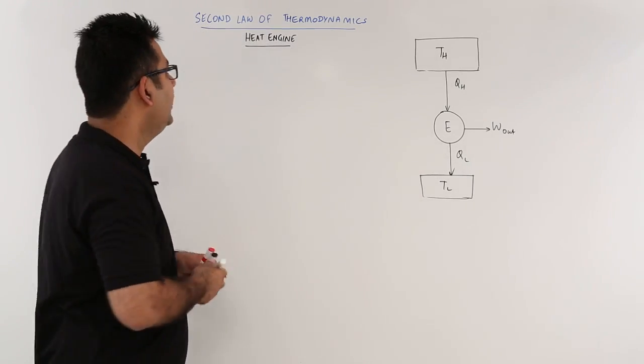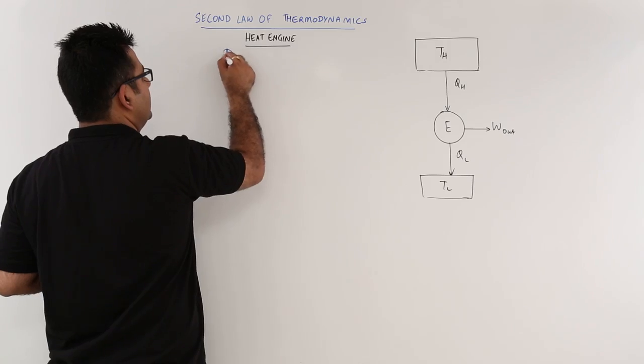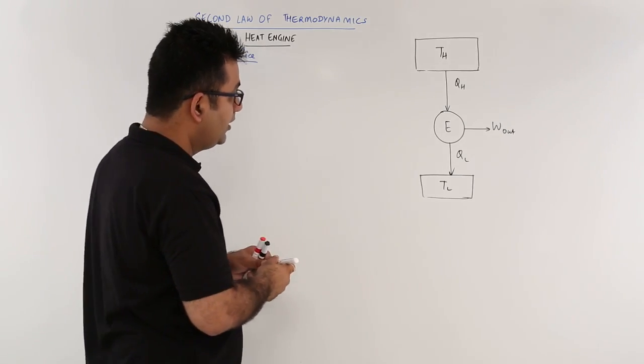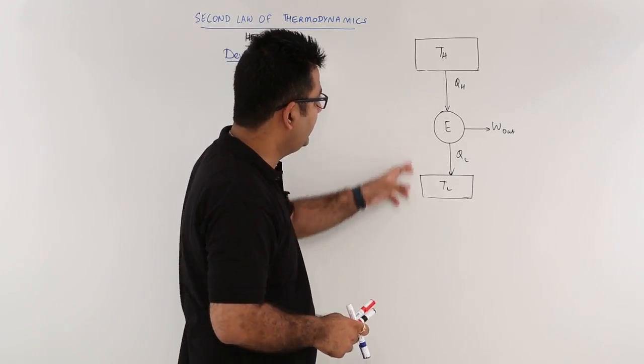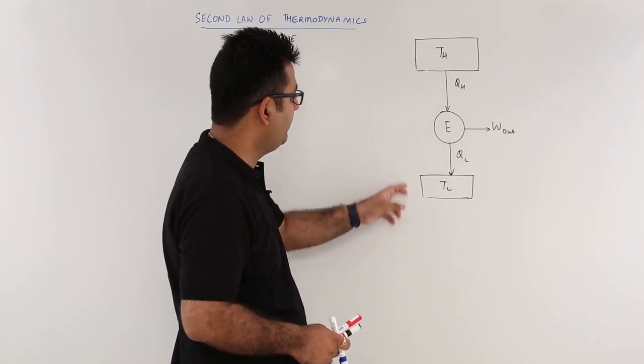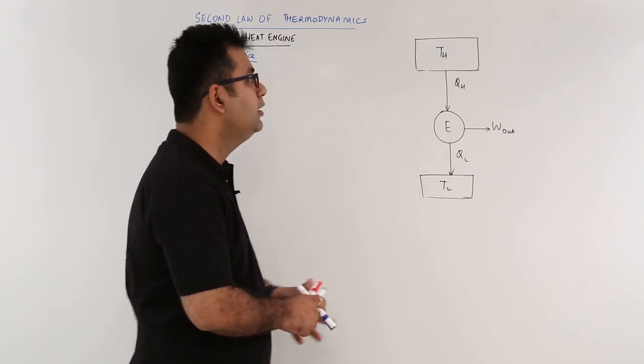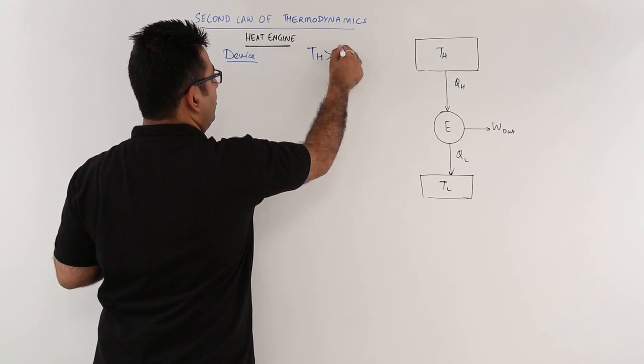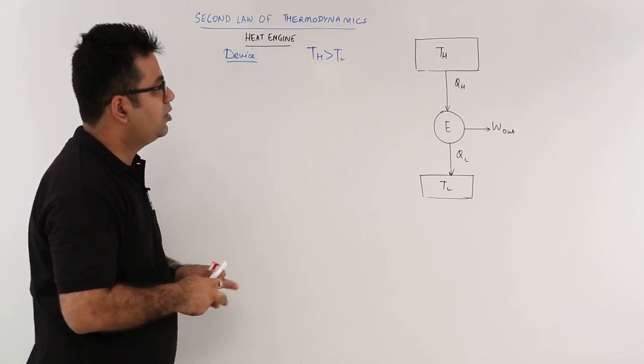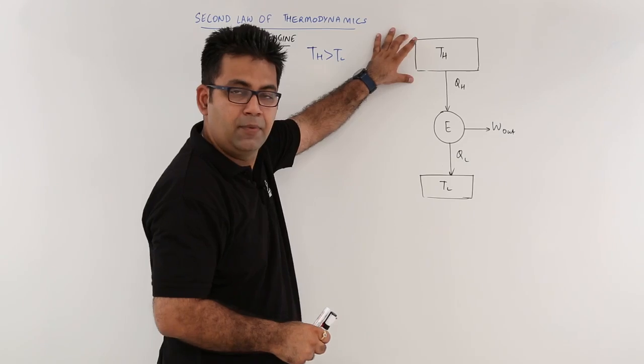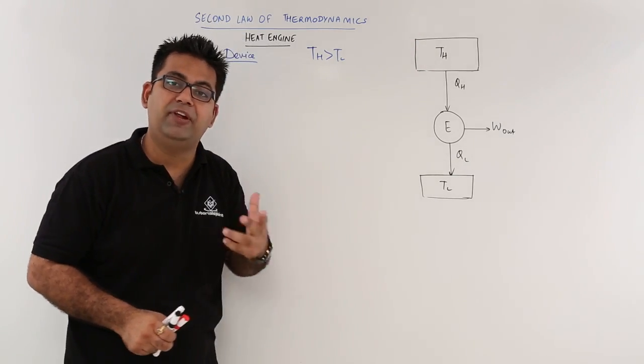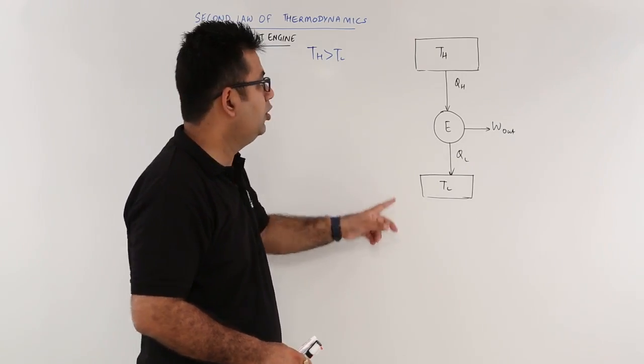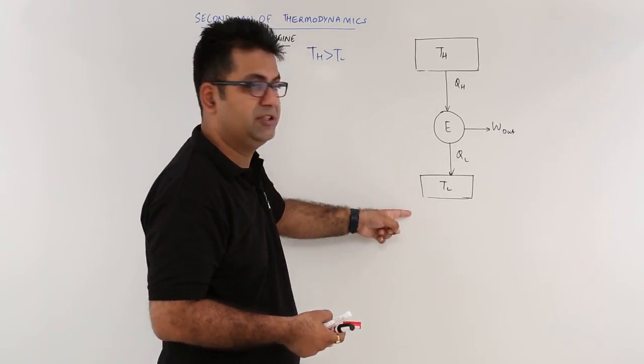What is a heat engine? A heat engine is basically a device which exchanges heat between two temperature reservoirs, TH and TL, where we assume that TH is always higher as compared to TL. Because this temperature is higher, the spontaneous flow of heat is always from a high temperature to a low temperature. So your heat will start flowing from this to this.